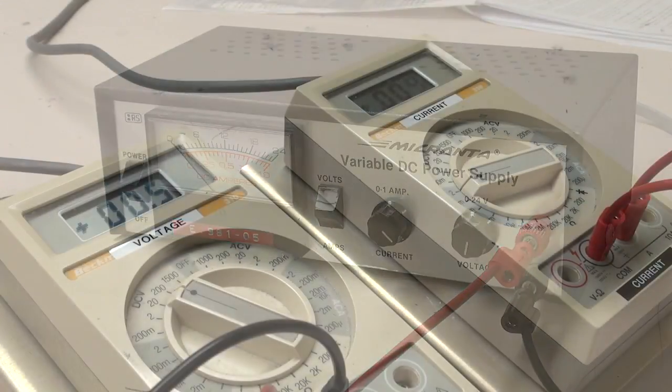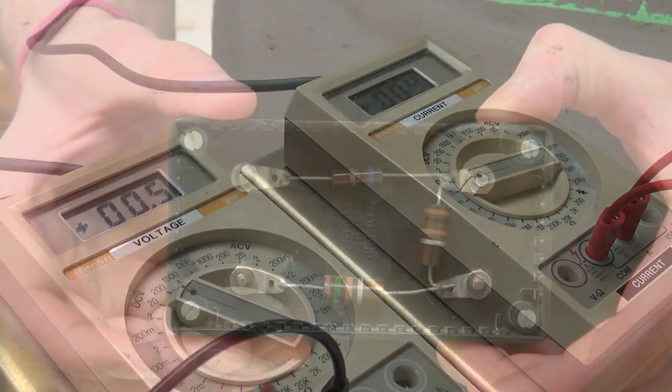Three commonly measured quantities in electric currents are voltage, current, and resistance.